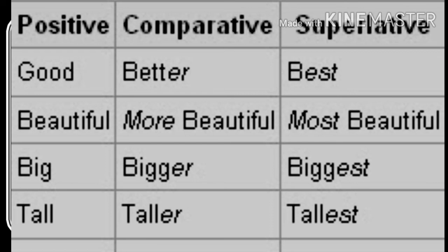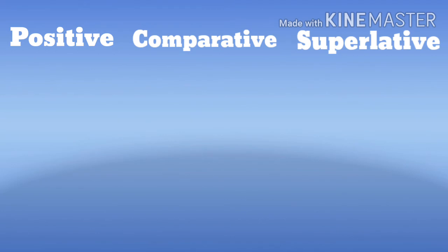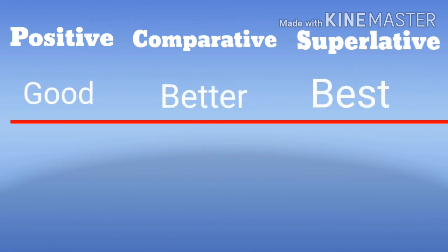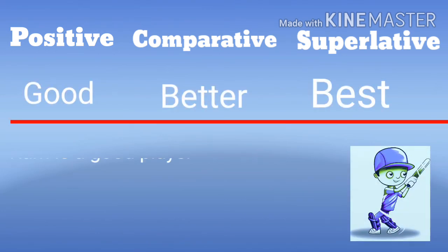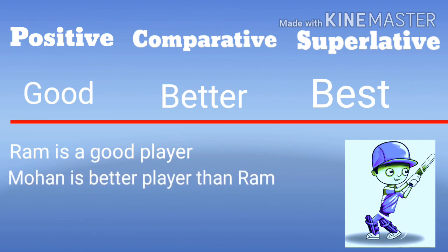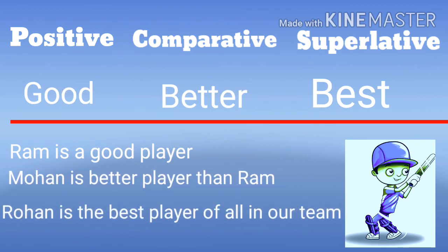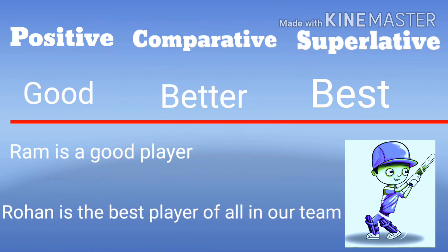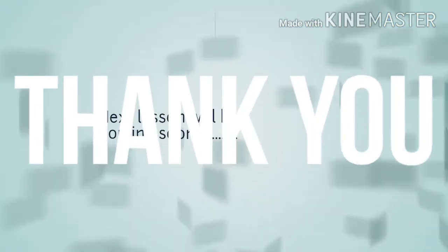These are some words to study and learn at home. Let's make a few sentences on good, better, best. Ram is a good player. Mohan is a better player than Ram. Rohan is the best player of all in our team.